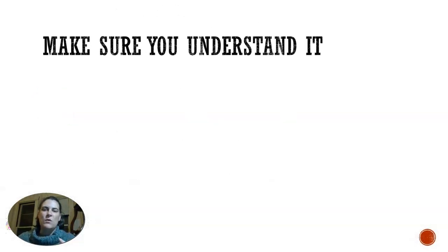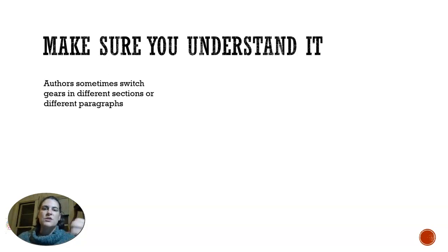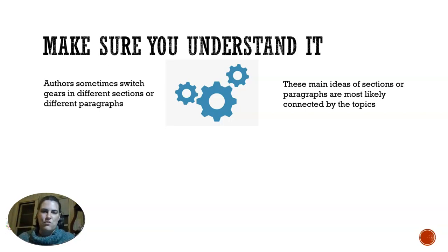That is the exact point — we want to make sure you're understanding the text carefully, not just on the surface of, oh, they're talking about video games and it could help ADHD, but really understanding everything they're talking about and not missing any important information. As we're reading, authors might actually switch gears in different sections or paragraphs. They might switch gears because there's another important piece they need to make sure you know. But keep in mind that as they're switching from gear to gear, they are likely connected — because gears don't actually work if they're not touching each other. The topics are probably going to be connected somehow, just like in that example where they all came back to the video game and the medical treatment idea.